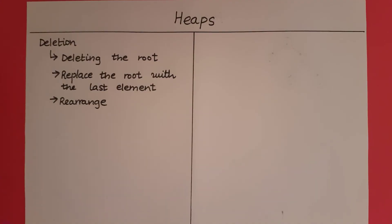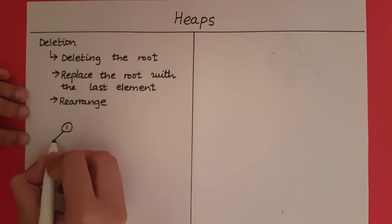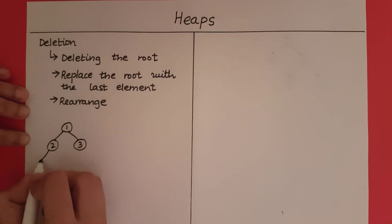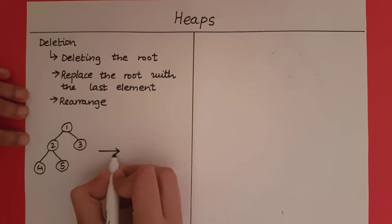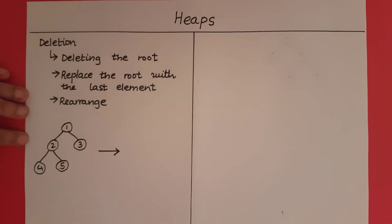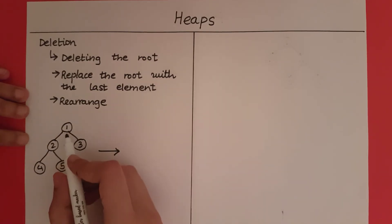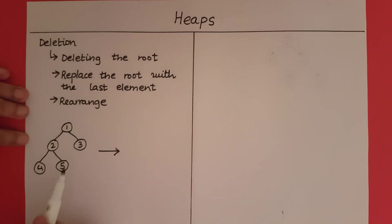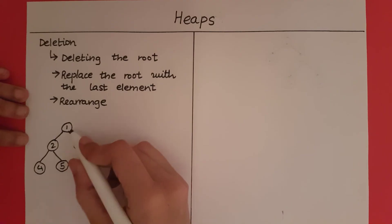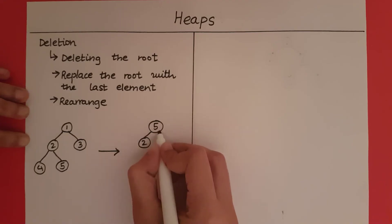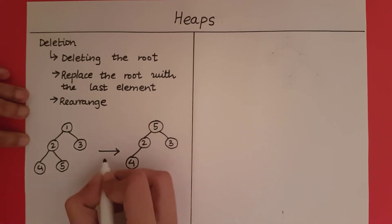Let's say we are deleting from a min heap. We are going to delete one, the root. We replace it with the last element. Traversing the heap from left to right, the last element is five. So we replace one with five and return one.